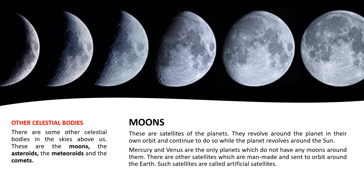Almost all the planets have their satellites. Mercury and Venus are the only planets which do not have any moons around them. These moons are actually the natural satellites. There are also some man-made satellites which are sent into the orbit around the earth, and such satellites are called artificial satellites.